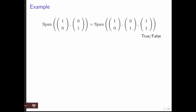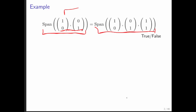Let's go through a couple of examples. Here we have the span of the vectors (1,0) and (0,1), and we have the span of the vectors (1,0), (0,1), and (1,1). Is it the case that these two vectors can generate the same set of vectors as these three vectors?